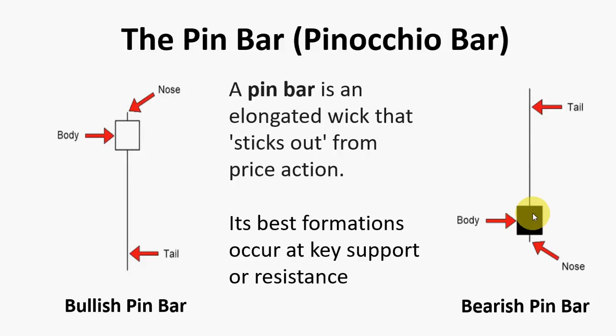While pin bars can form anywhere in the chart, the best and most effective formations occur at key support or resistance levels. So the key is to look out for prior market action. If the pin bar is pushing through a prior support or technical level, the probability is high that the pin bar will result in a reversal or at least a significant retracement of the prior market price.